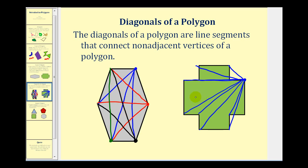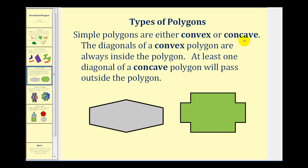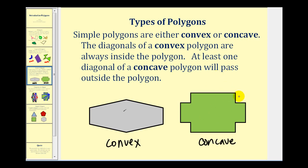So these two polygons represent two different types of simple polygons. Simple polygons are either convex or concave. The diagonals of a convex polygon are always inside the polygon. However, at least one diagonal of a concave polygon will pass outside the polygon. So this would be a simple convex polygon because all the diagonals were inside the polygon, and this would be a simple concave polygon because some diagonals pass outside the polygon.